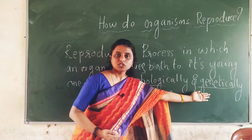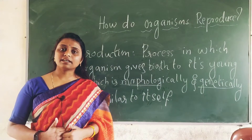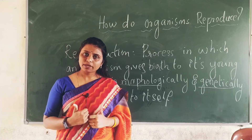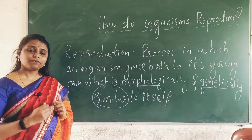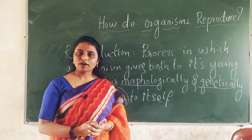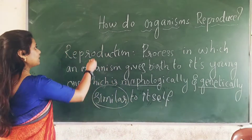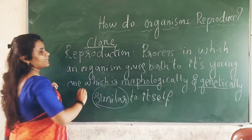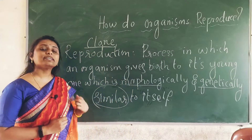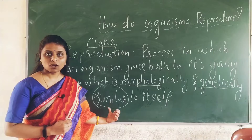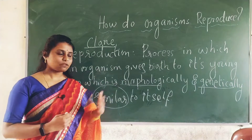The young one produced by the parent will be morphologically and genetically similar to the parent. However, we will not be the exact copy of our parents — there will be similarity, but we are not exact copies. If we were exact copies of our parents, we would be called clones. A clone is the exact copy of its parent, so we are not clones.